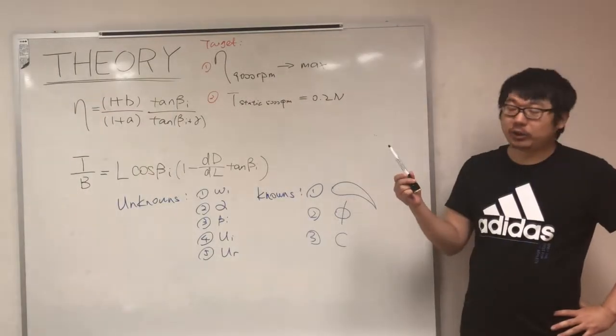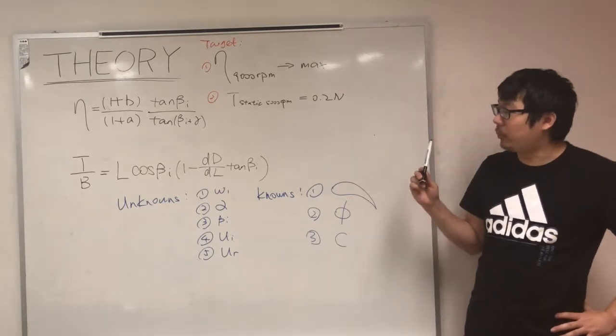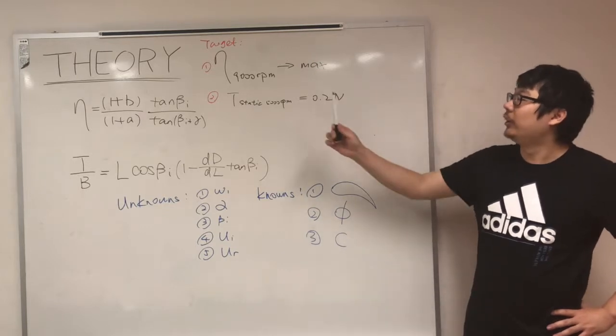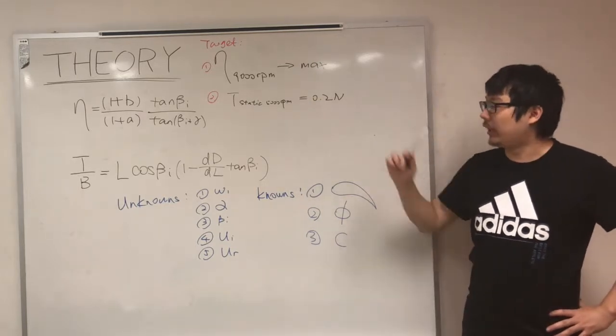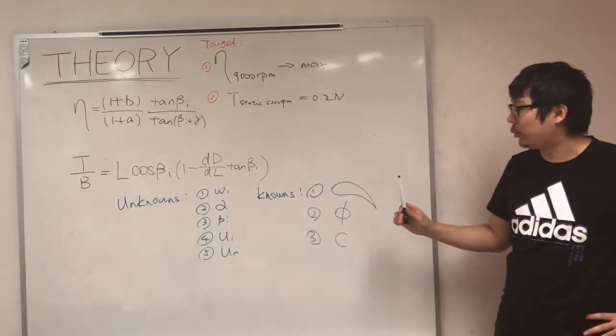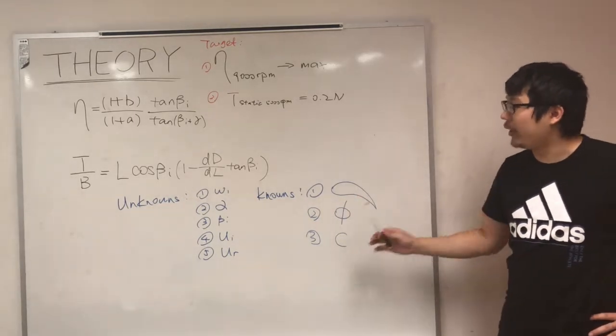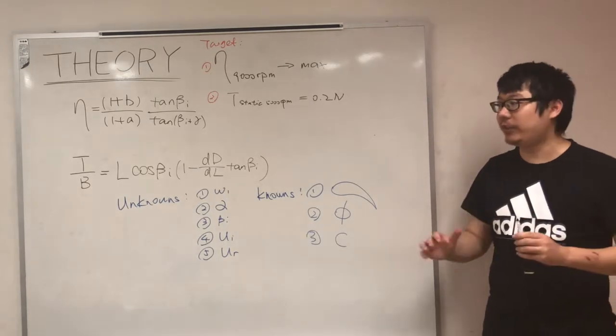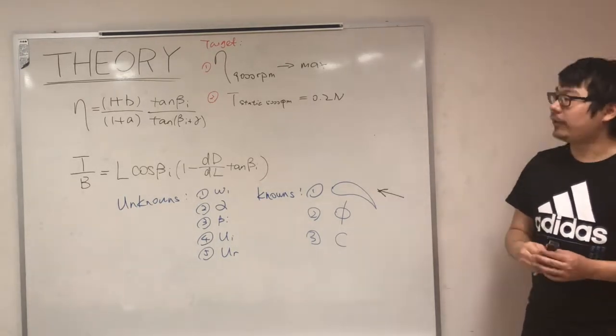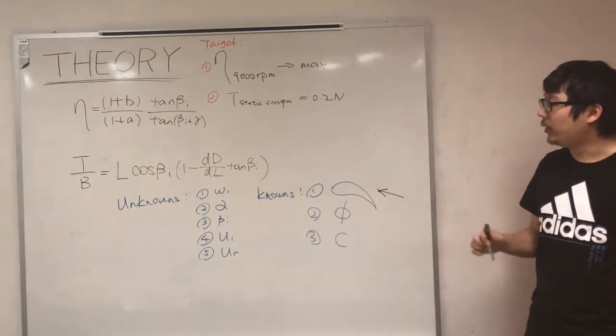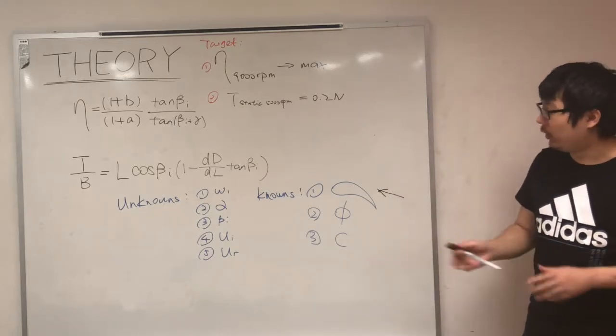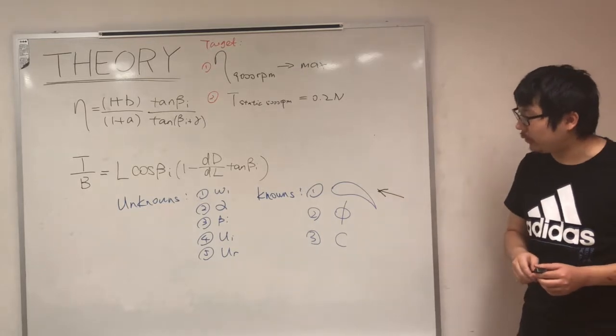Now, I will introduce the design process for our propeller. Globally, we have two equations, which is the maximum efficiency and static thrust. But the parameters we have to decide here are three. So, two equations, three parameters, we have infinitely many solutions. Therefore, in order to solve this problem, we got to fix a parameter. And the parameter we choose to fix here is the NACA foil shape of the cross section.